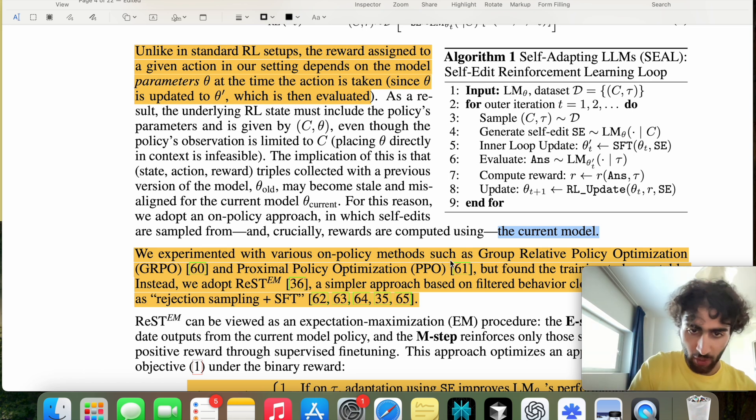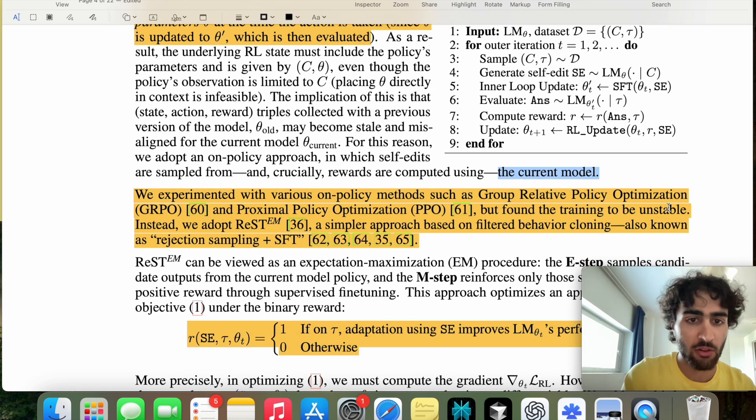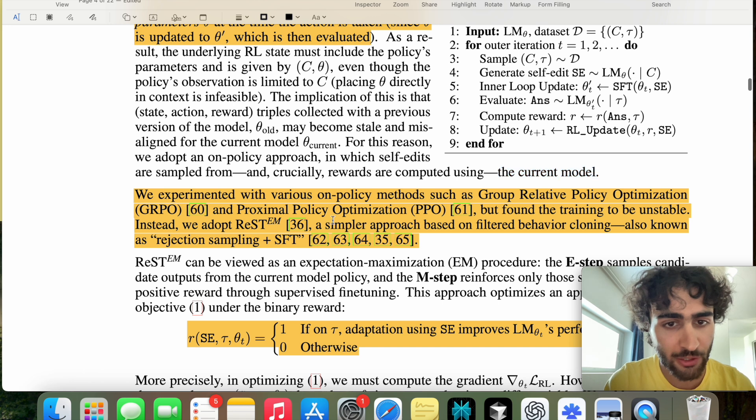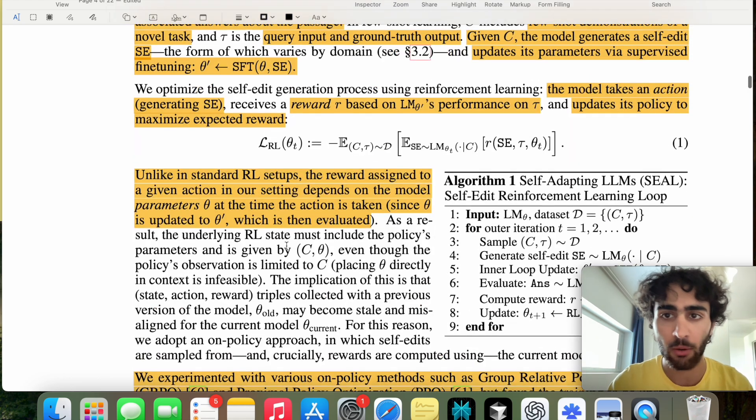They do talk about GRPO and PPO, but for whatever reason, this was too complex or rather unstable. And so they use what's something called RESTEM. Feel free to look that up on your own time, but it uses rejection sampling and SFT, which are two methods also used by DeepSeek. So there you have it.